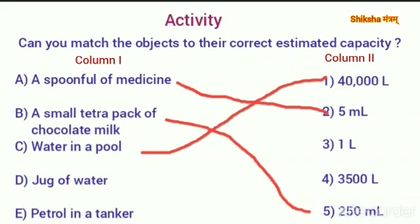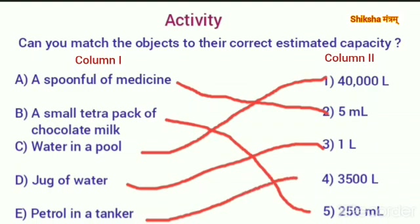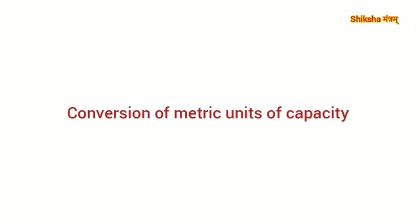A jug of water can hold approximately 1 liter of water, and petrol in a tanker — a tanker can hold approximately 3,500 liters of petrol. Now let's look at the conversion of metric units of capacity.